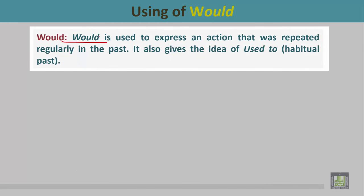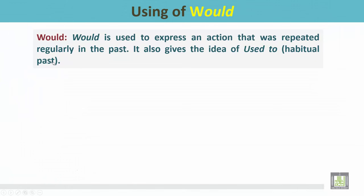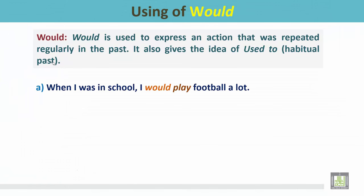Would is used to express an action that was repeated regularly in the past. It also gives the idea of 'used to,' which means a habitual past. For example: When I was in school, I would play football a lot. Here, 'would play' means the person used to play a lot in the past. It expresses a habitual past.